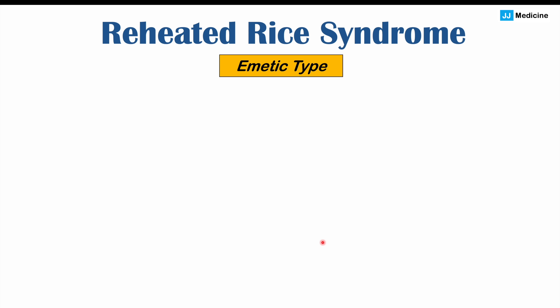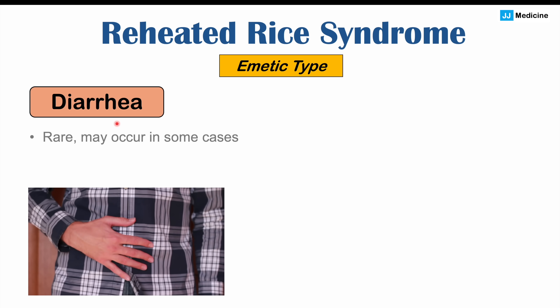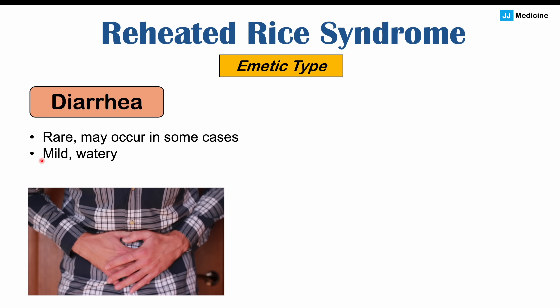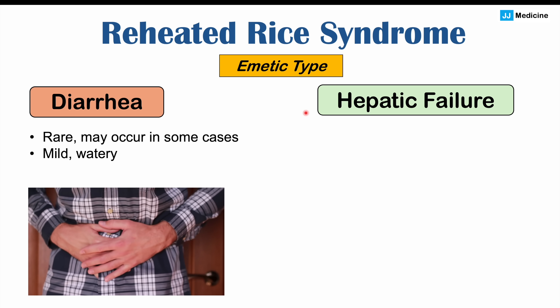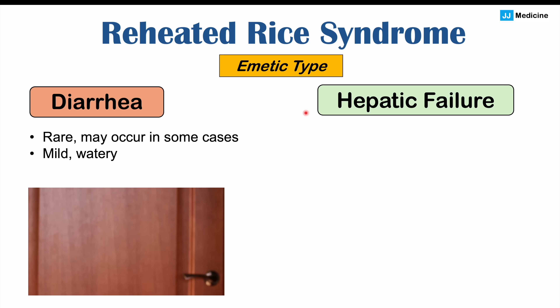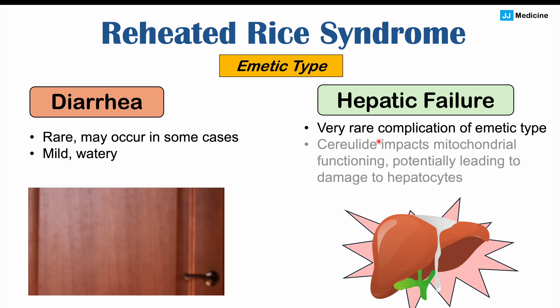Some other possible signs and symptoms of the emetic type include diarrhea, although diarrhea is going to be more uncommon in this particular type — if it does occur, it's going to be quite mild with a little bit of watery diarrhea. Another important point is that there is a very, very rare chance that there may be hepatic failure or hepatic injury, meaning injury to the liver. This is because the cerealide toxin inhibits proper mitochondrial functioning, and hepatocytes — those liver cells — are highly metabolically active, which is why they can be primarily affected by this toxin.